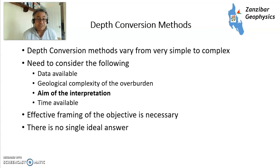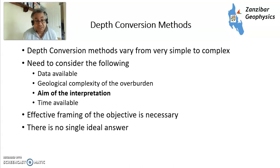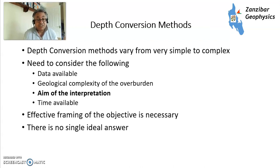Depth conversion models can be as simple or as complex as you need them to be. You need to consider what data is available — do you just have seismic velocities, or do you have well data, check shots, VSPs? How complex is the overburden? If it's a simple system with mud rocks that increase velocity with depth due to compaction, that's easy. But if you've got layers of limestone, chalk, or evaporites such as salt with anomalously high velocities, you'll need a more complicated velocity model. You also need to consider the scale of your interpretation and the time available. To carry this out successfully you need effective framing, because there is no single ideal answer.